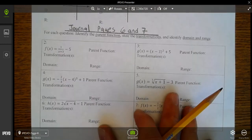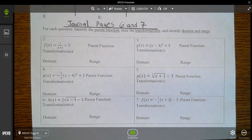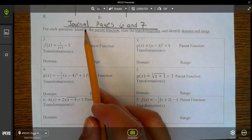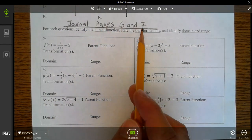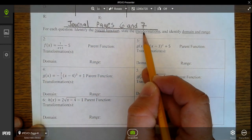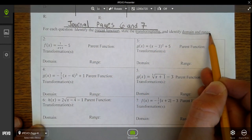Let's look at problems 2 through 7. You can find information about problems 2 through 7 on journal pages 6 and 7. It's asking you to identify the parent function and transformations and the domain and range.